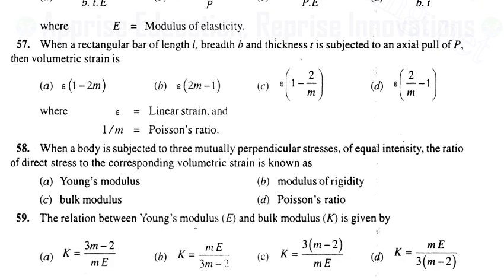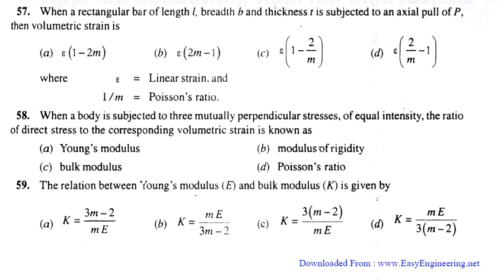Question 58: When a body is subjected to three mutually perpendicular stresses of equal intensity, the ratio of direct stress to the corresponding volumetric strain is bulk modulus. The correct answer is bulk modulus - the ratio of direct stress upon volumetric strain.